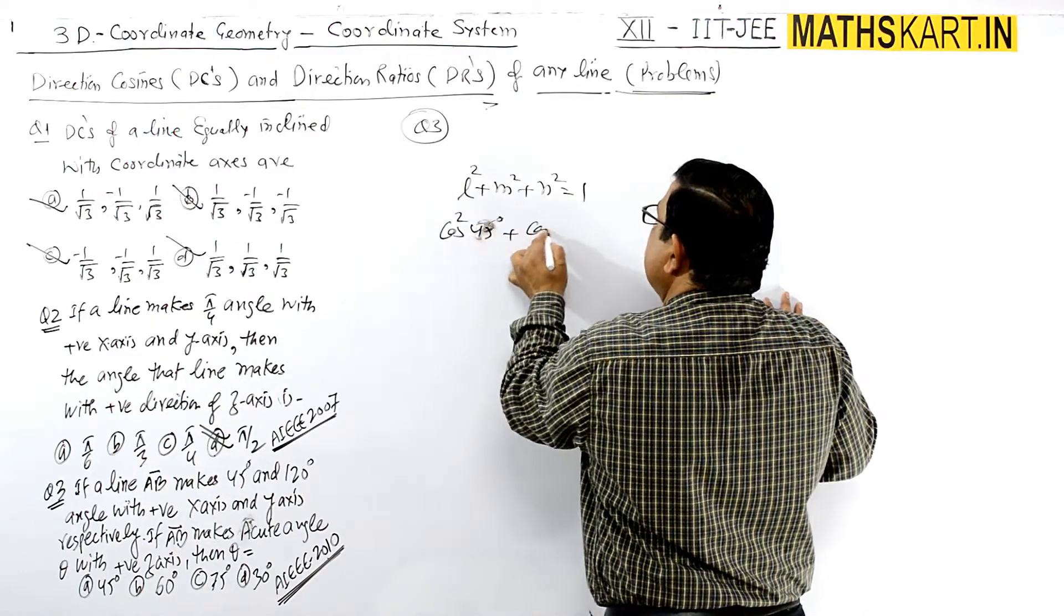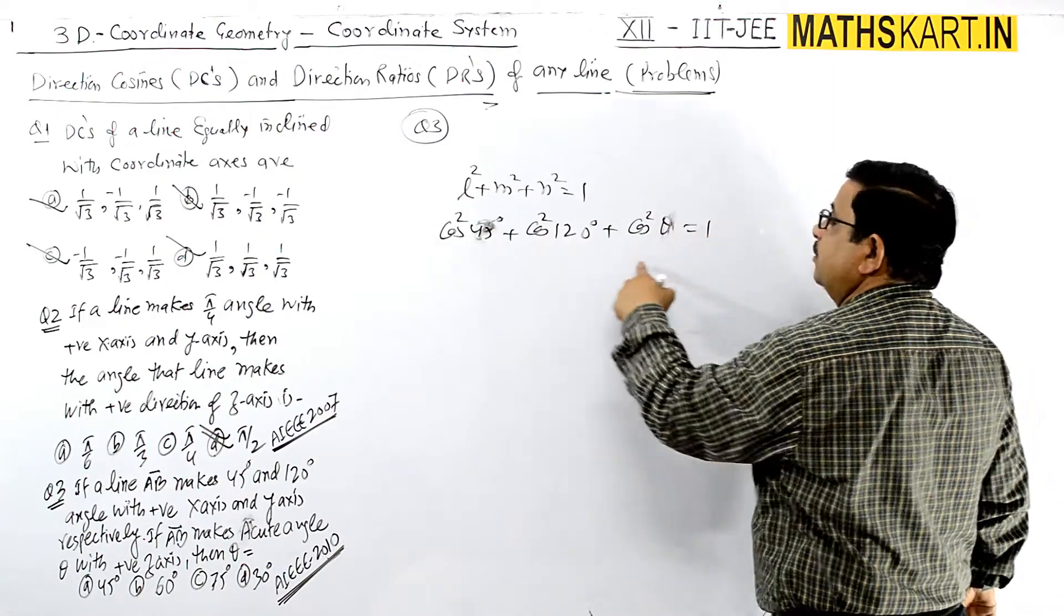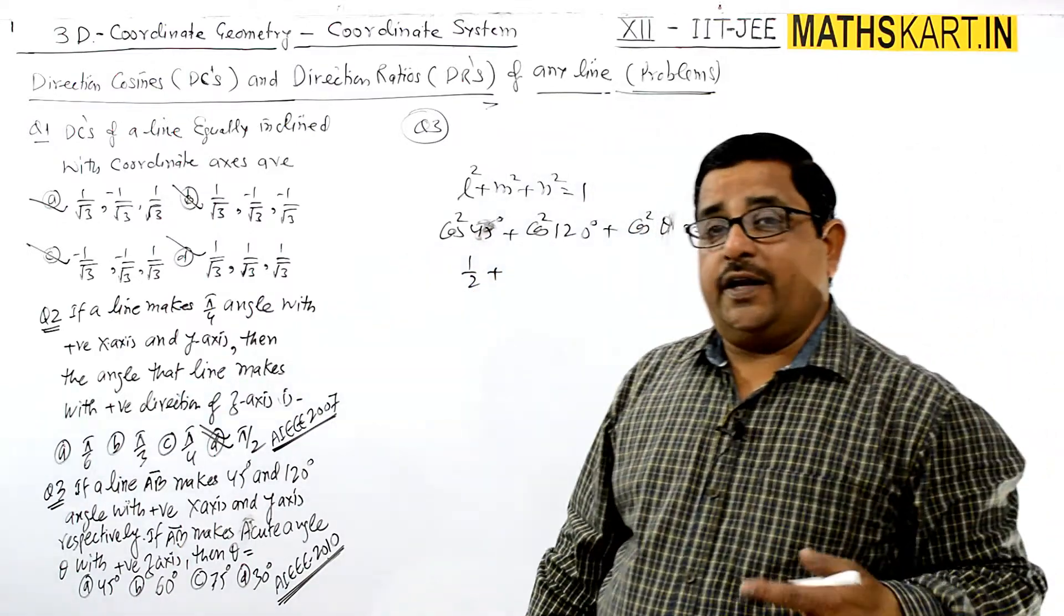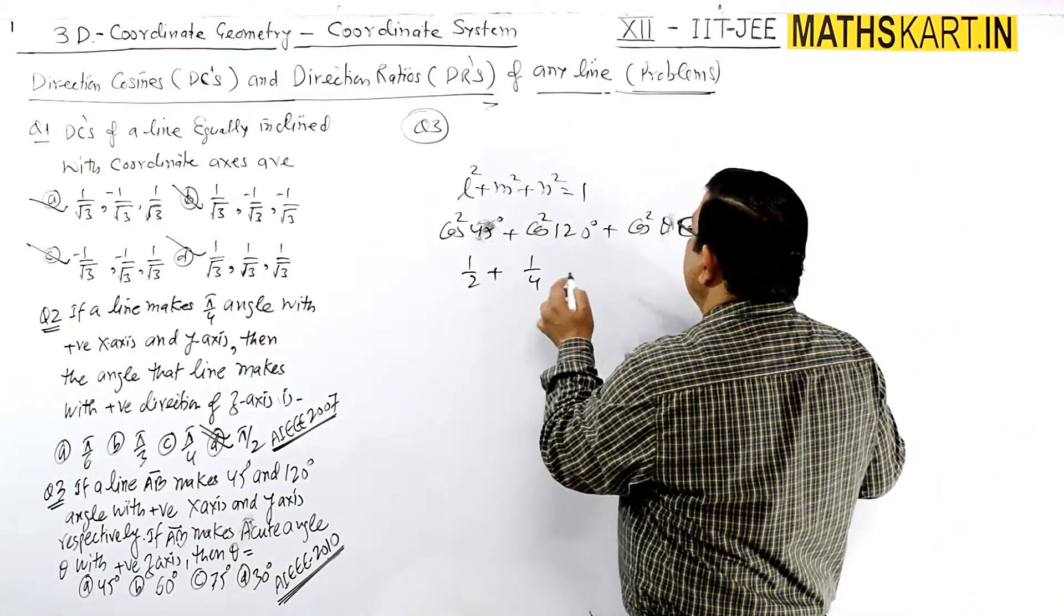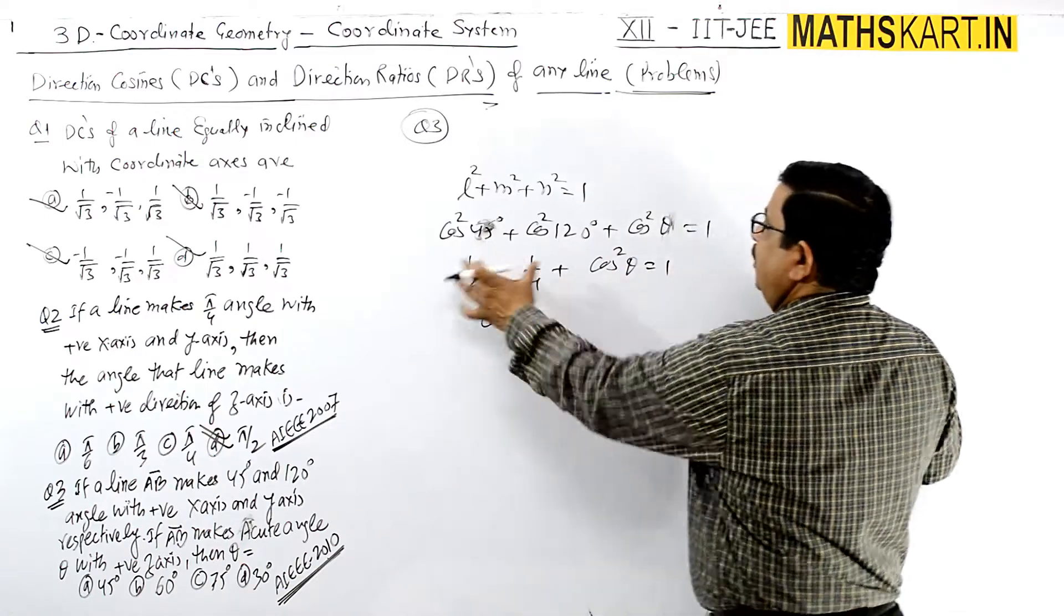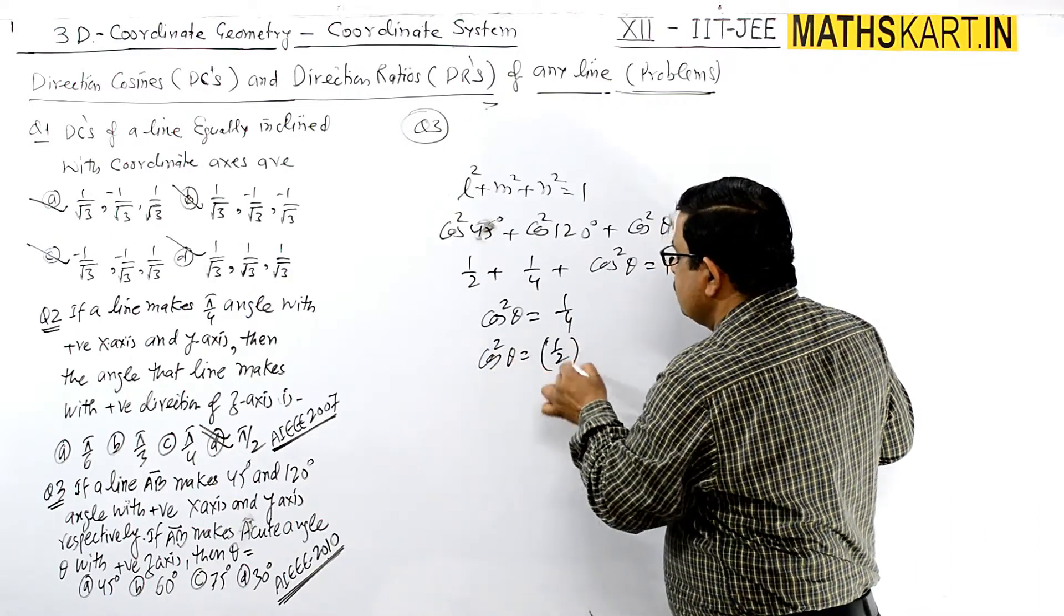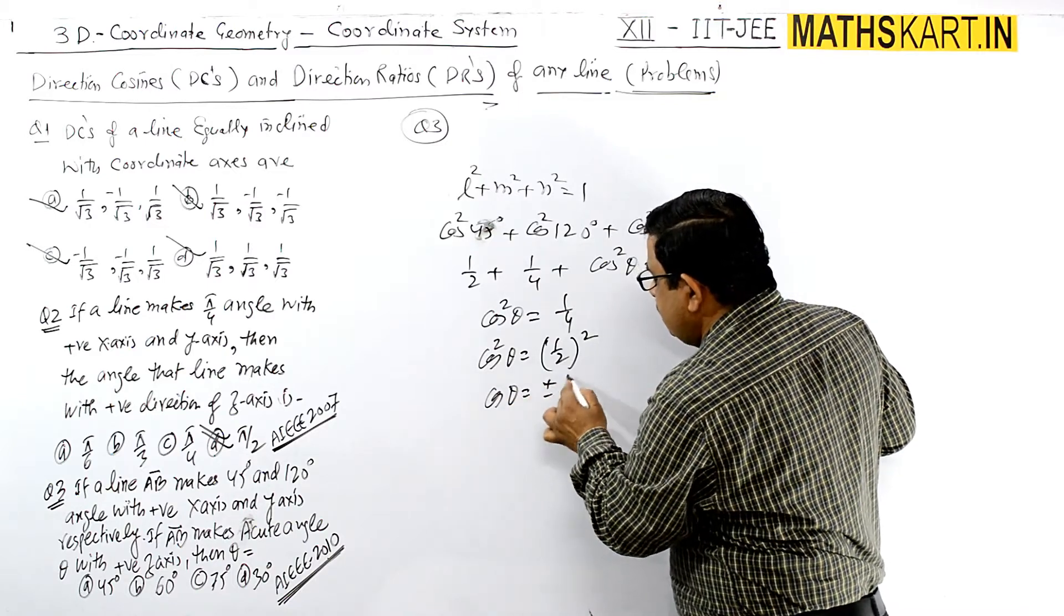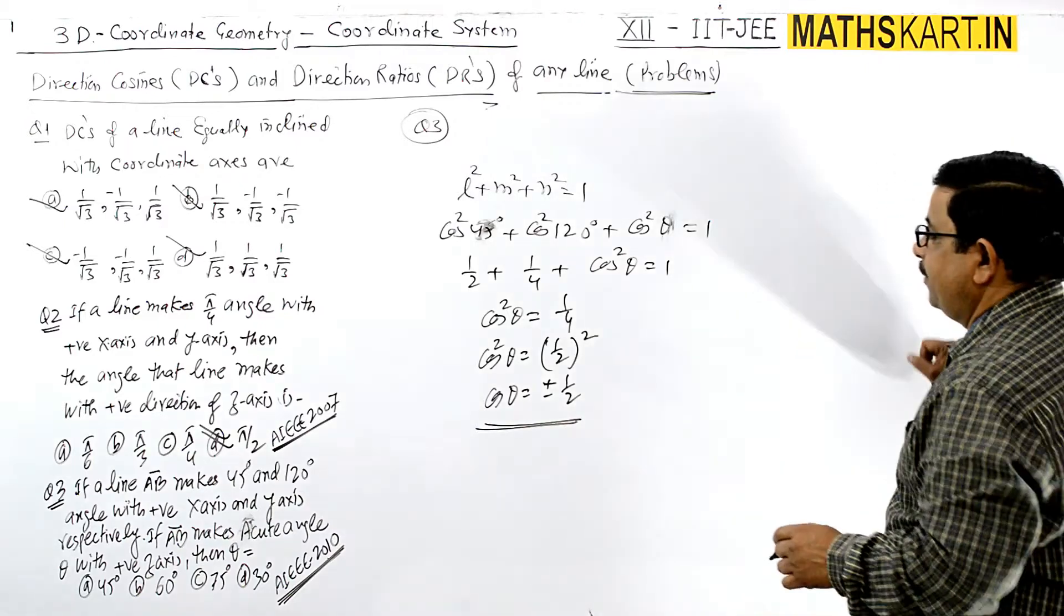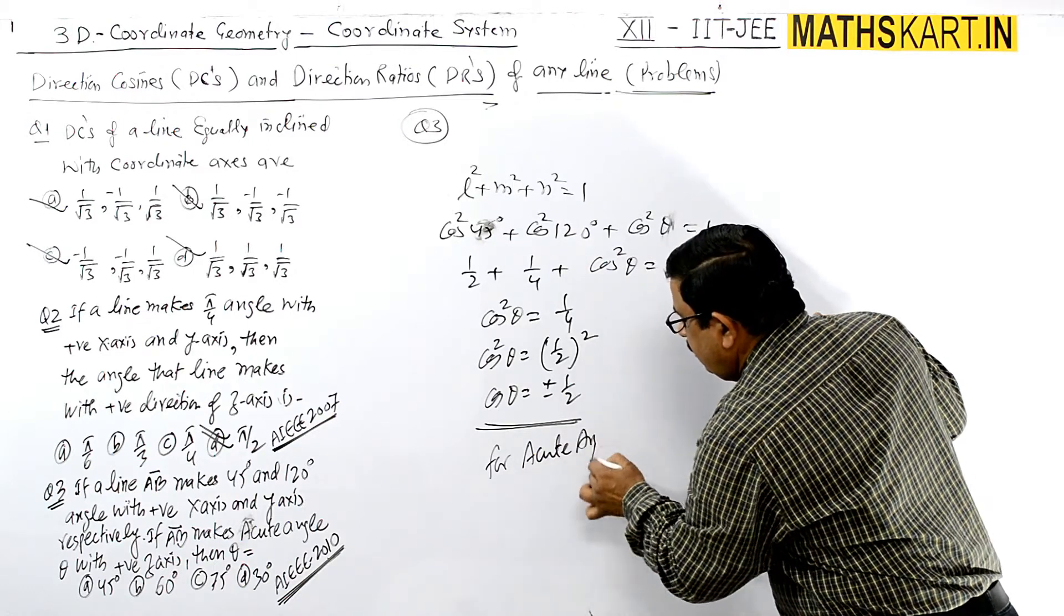This is 1/√2, so 1/2. cos(120°) = -1/2, so (-1/2)² = 1/4. cos²θ = 1. So 3/4 + cos²θ = 1. cos²θ = 1 - 3/4 = 1/4. We can write cos²θ = (1/2)². When you take the square root, cos θ = ±1/2, giving two values.